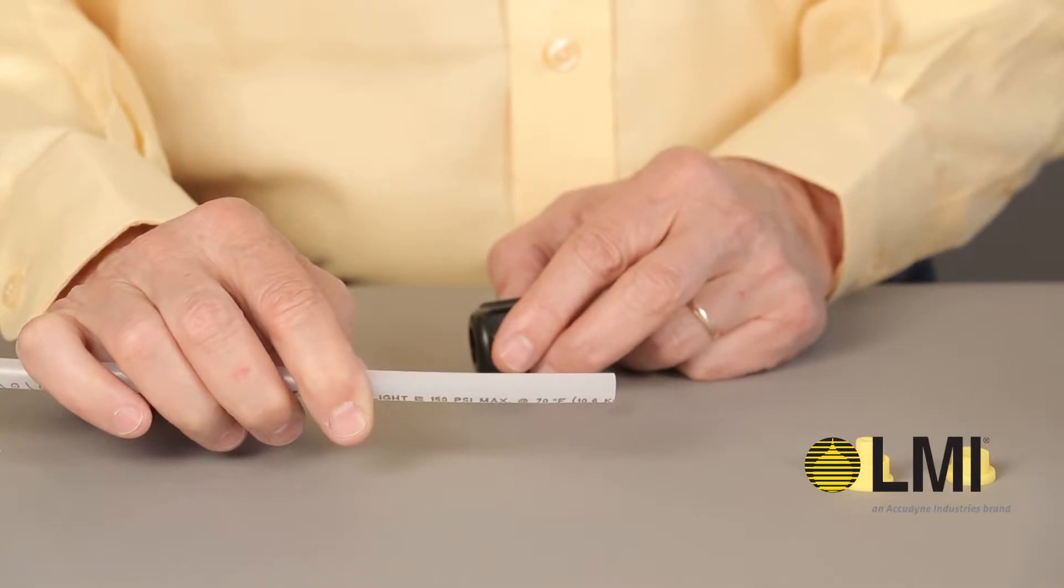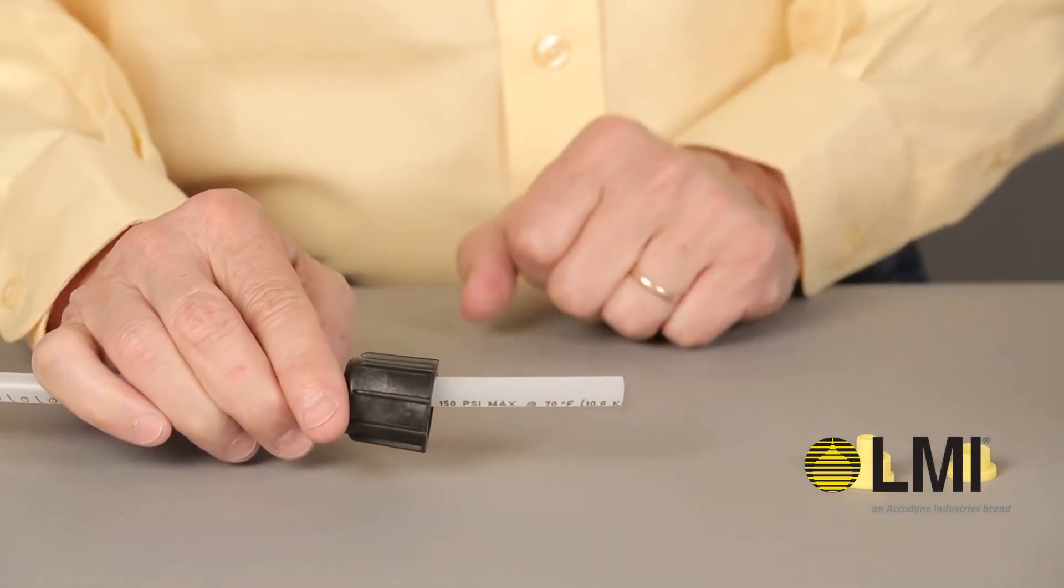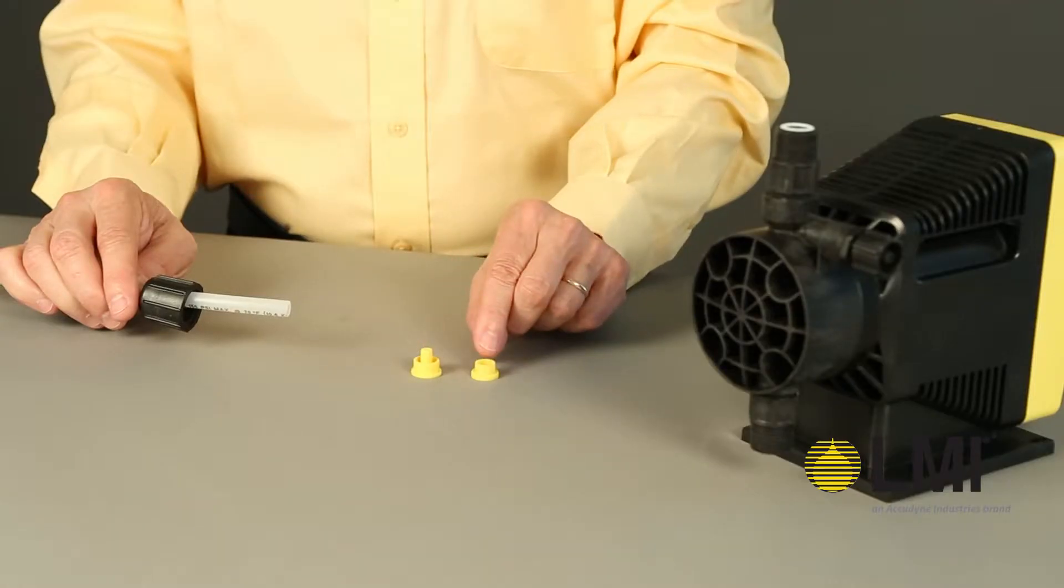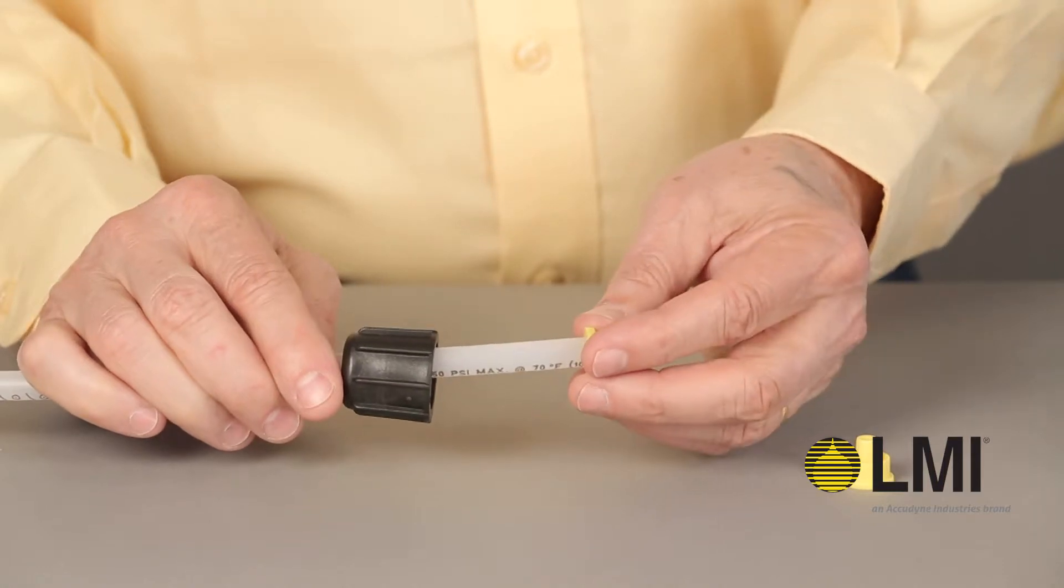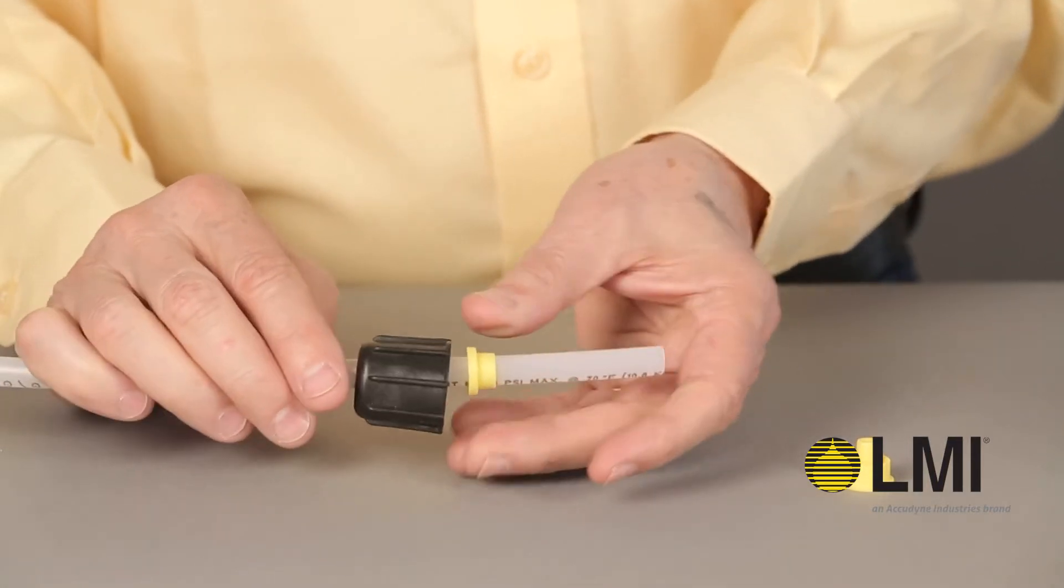Feed the cut tubing through the top of the coupling nut. Noting the difference between male and female ferrules, insert the female ferrule into the cut tubing with the raised collar positioned away from the freshly cut tube end.